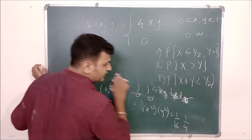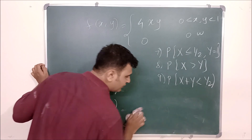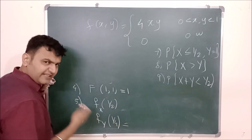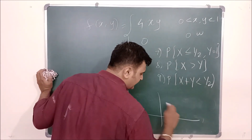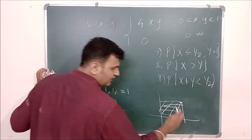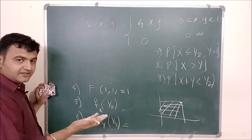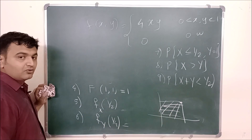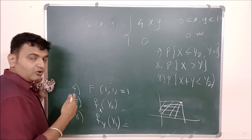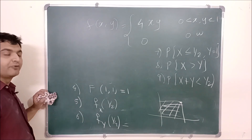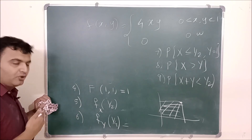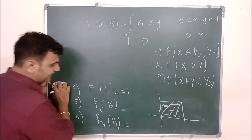What will F(1, 1) be? It will be 1 directly. Why? Because it is the extreme endpoint, and you are integrating over the complete region below it. The joint CDF takes the value 1 at the extreme point because you are summing up everything below — in this case integrating everything below (1, 1).